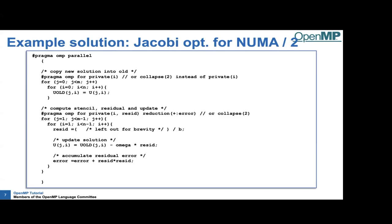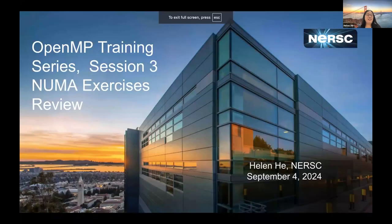Any questions on either SIMD with Pi or NUMA optimization of Jacobi? No questions in the chat or Slack. Besides the SIMD and Jacobi exercises, we have two more NUMA exercises for Session 3, adapted to the Perlmutter CPU node to give more direct visualization of how NUMA plays out on that system.